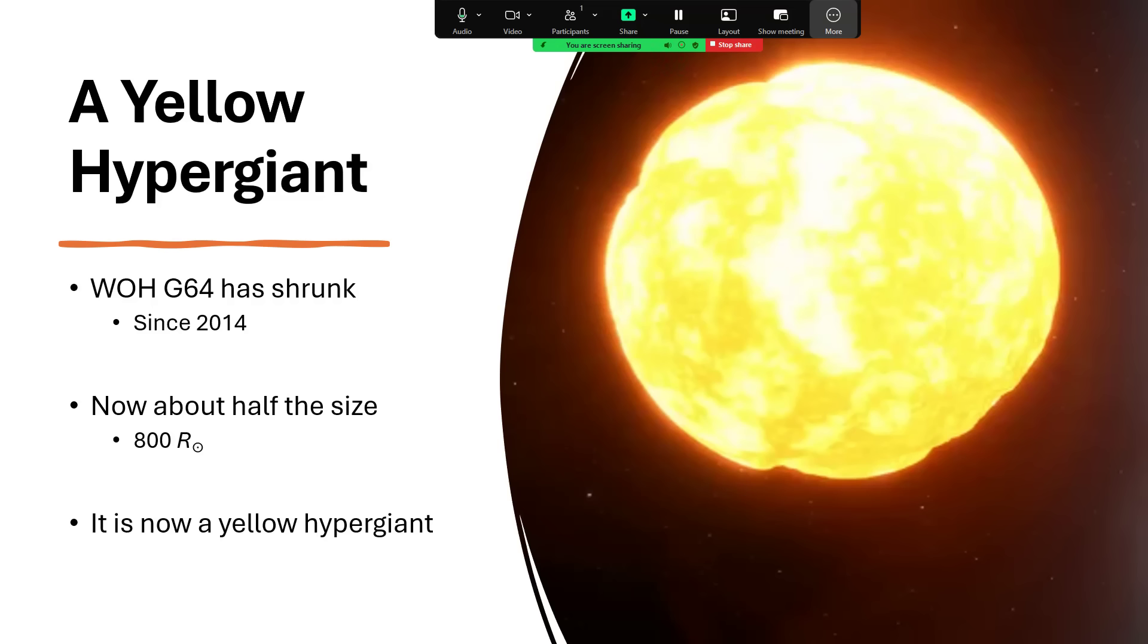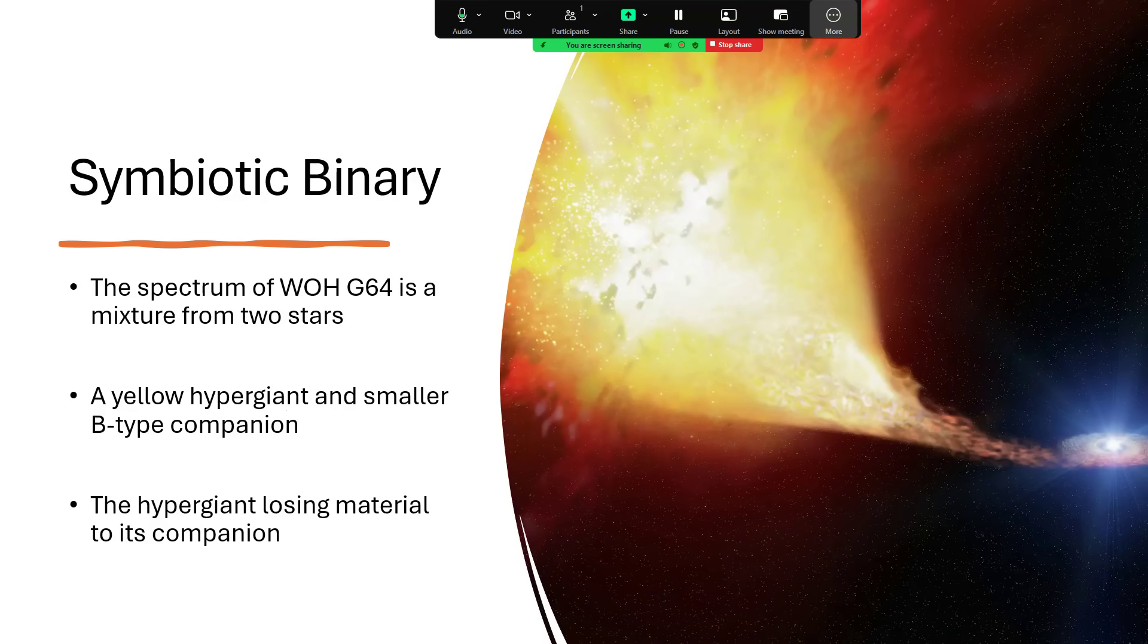So this yellow hypergiant, we now think that it has a companion star. Follow-up studies have shown that the spectrum of light coming from it contains hints, not only of the yellow star, but of a smaller blue-white B-type companion. And that perhaps what's going on here is that the B-type companion is stripping away the loosely held outer layers of the star. So the outer layers of that red supergiant were being removed by the gravity of its companion, making the companion build an accretion disk and boosting its mass at the expense of its much larger neighbor. And having removed those outer layers, we've now exposed the hotter inner structure within, hence the yellow color.